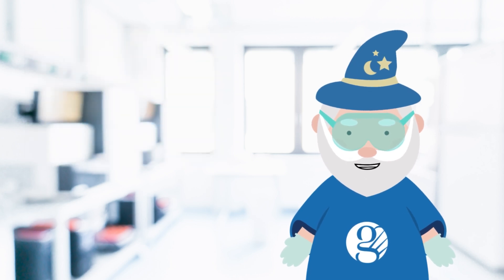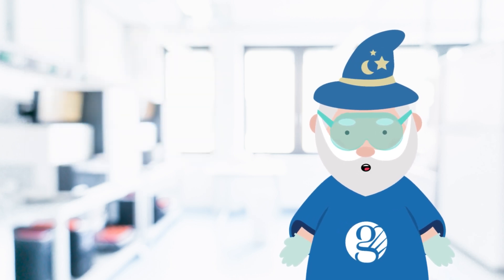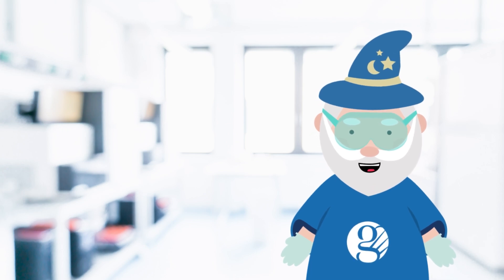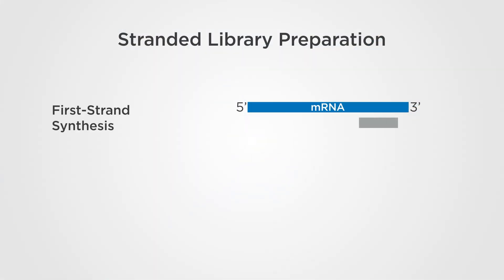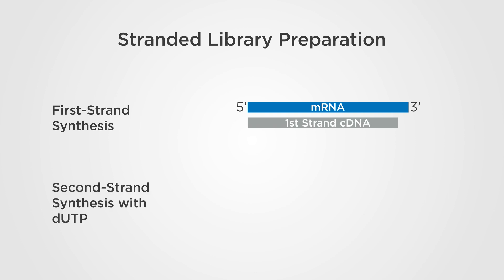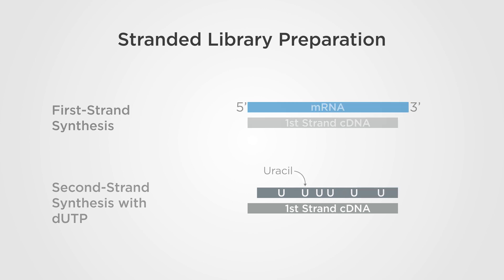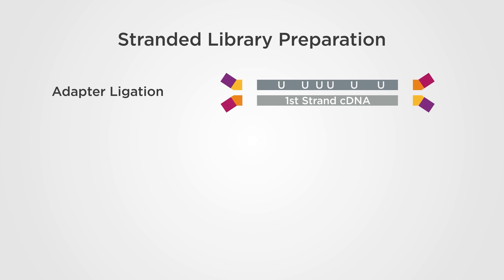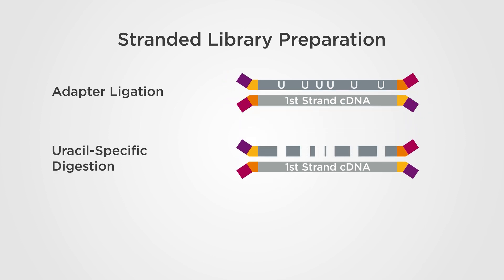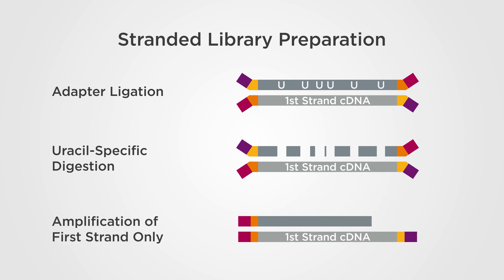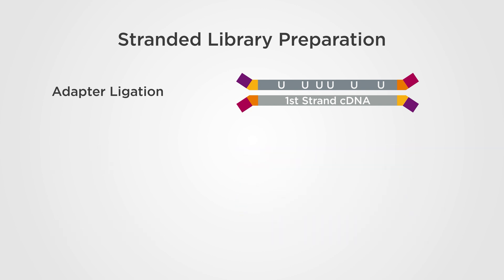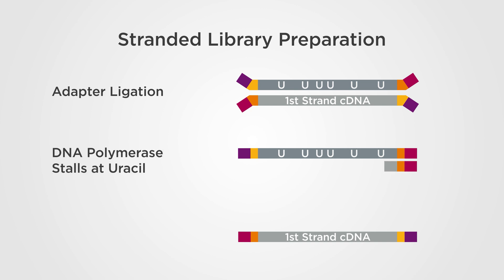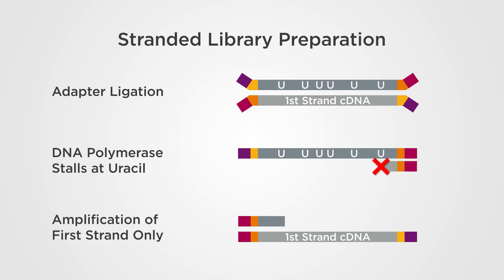In comparison, stranded RNA-seq distinguishes the first and second strands of cDNA. There are several ways to do this, but in general the process is more complicated than non-stranded library prep. One popular method uses dUTP to label the second strand with uracil instead of thymine. After adapter ligation, amplification of the second strand is blocked. This can be accomplished by performing uracil-specific digestion before amplification, or by using a DNA polymerase that cannot use uracil as a template.